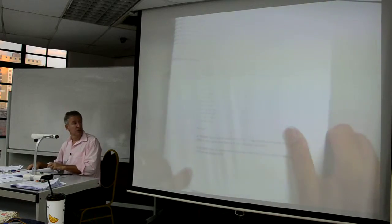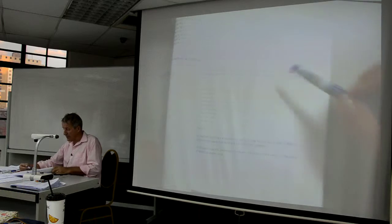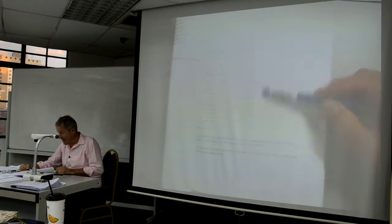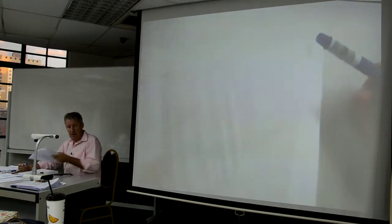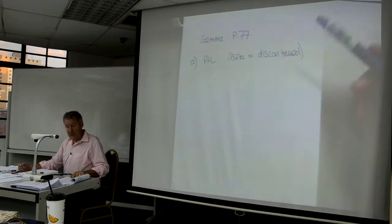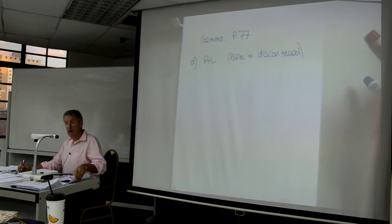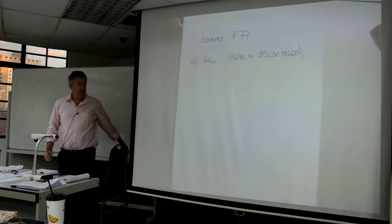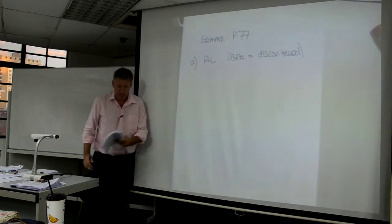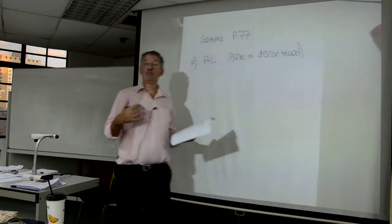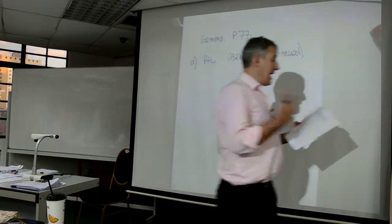So what we've got, you can't read that can you, what you've got is the P&L here of Gamma showing revenue of 970, showing cost of sales of 470, and we've got to redraft it on the basis that Beta is a discontinued operation. Gamma produces two products, A and B.